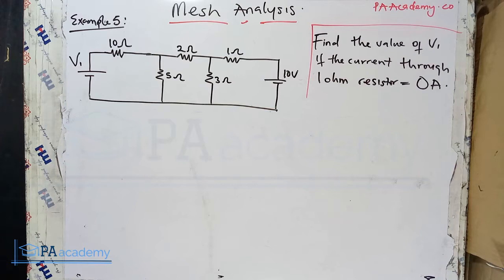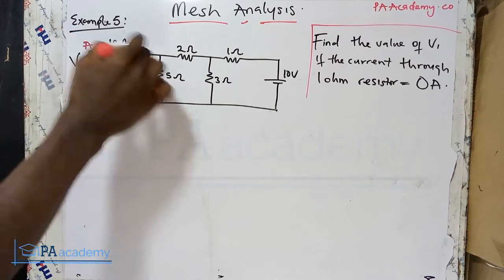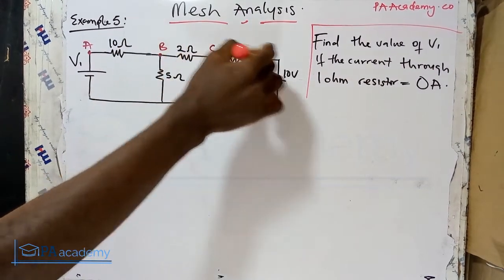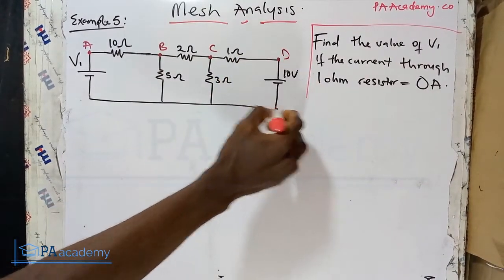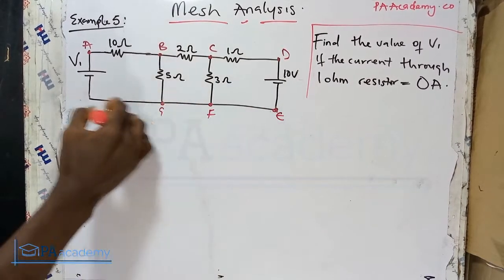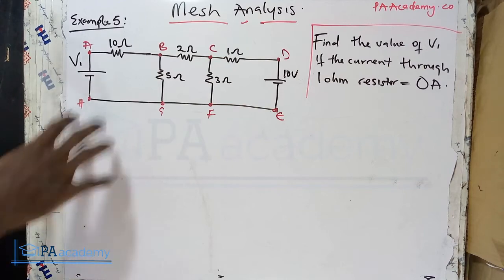All right, let's go ahead with mesh analysis Example 5. The first thing we always do is identify the nodes. So let's label this node A, this node B, node C, node D, point E, F, G, and H.